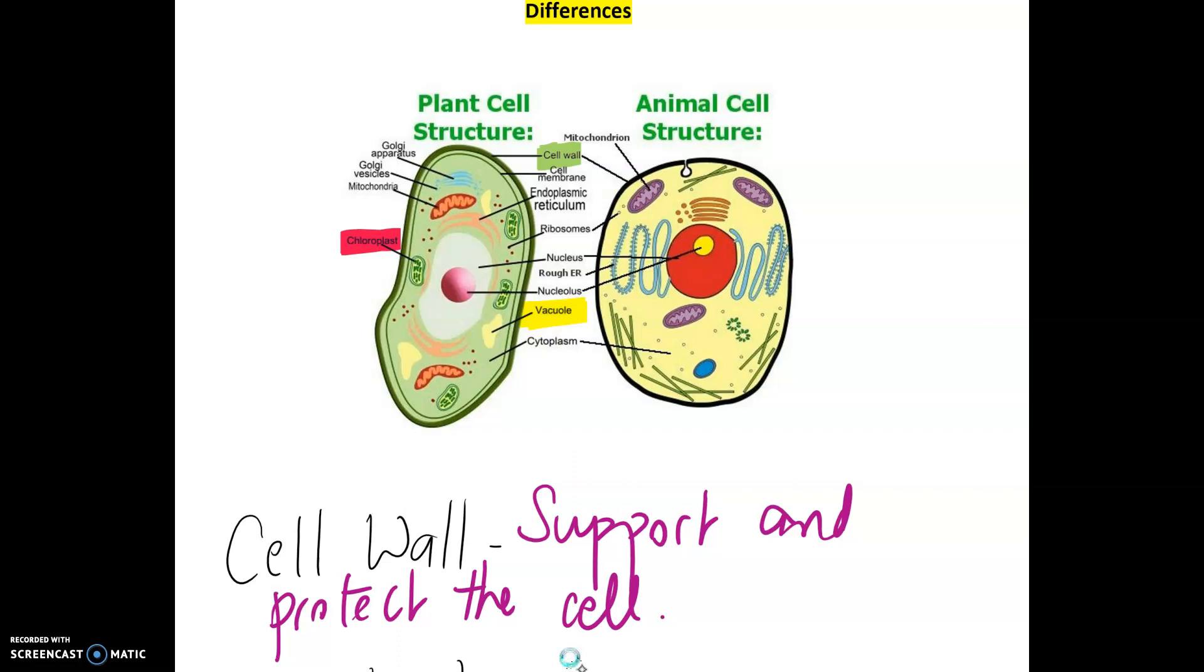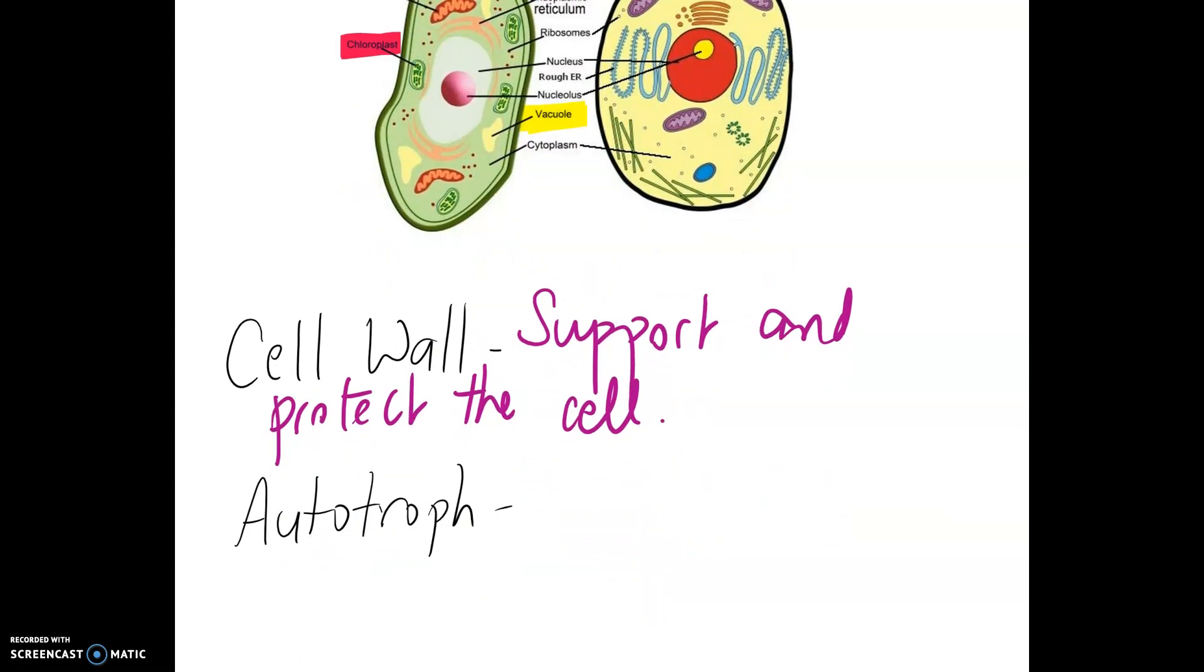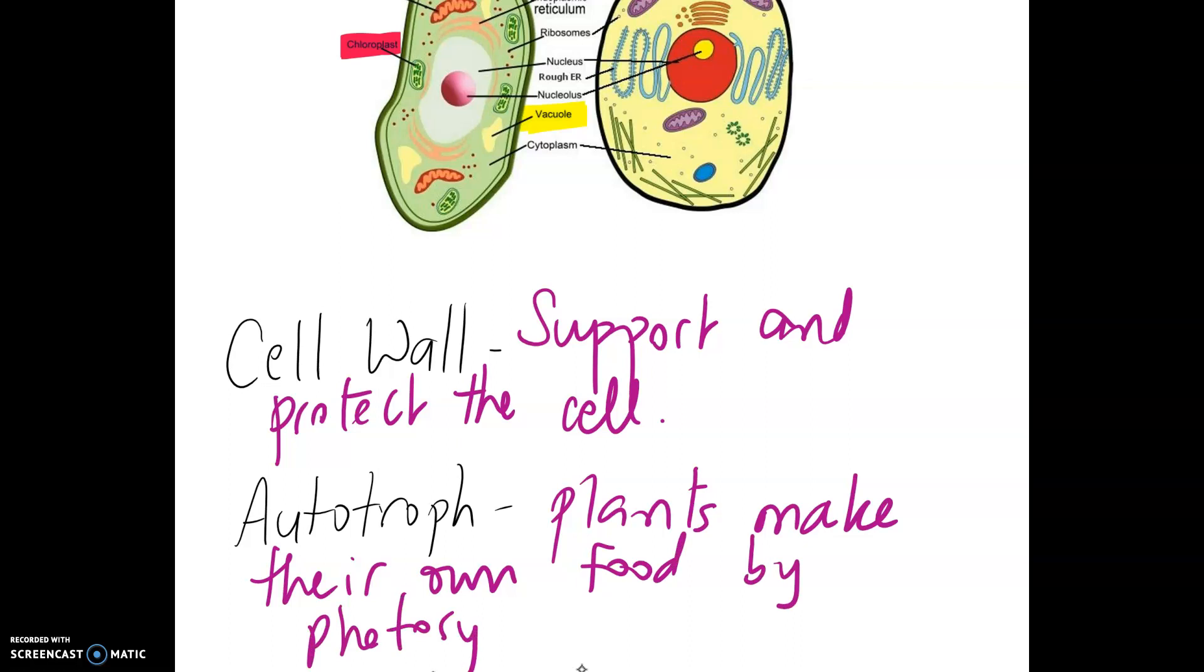The next one we're going to look at is autotroph. Autotroph is where the plant makes its own food through photosynthesis. When we say own food we're looking at the sugars they make. Photosynthesis is the process where plants use sunlight and water to make sugars which are then broken down by mitochondria, which is the powerhouse for the cell.